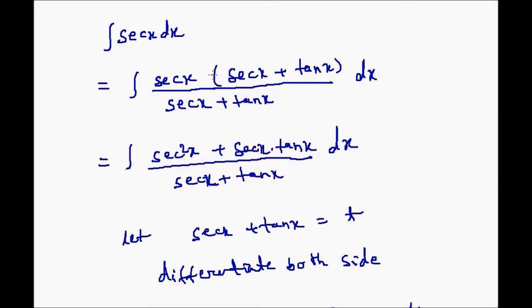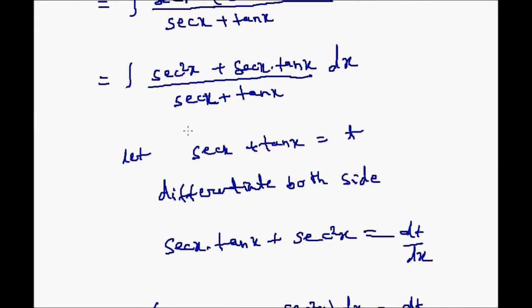Now the next step, we will multiply the bracket with sec x. So see here now it is sec x square x plus sec x into tan x upon sec x plus tan x dx.